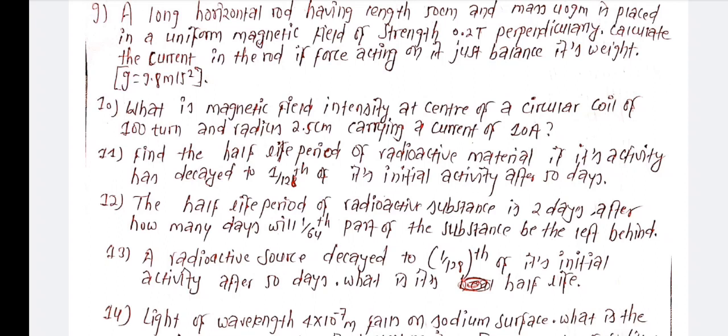Find the half-life period of a radioactive metal if its activity reduces to 1 by 120th of its initial activity after 50 days.